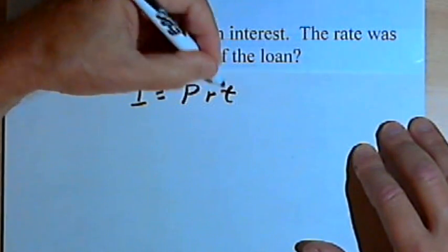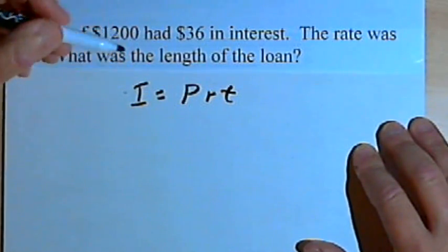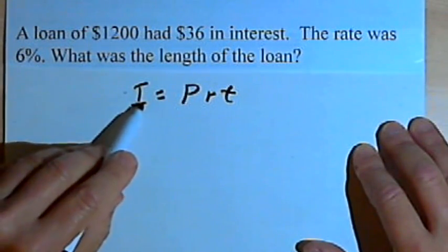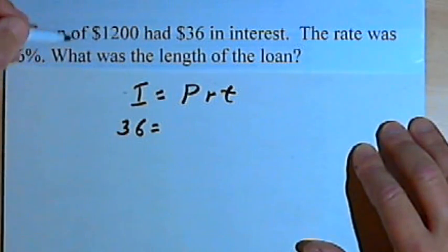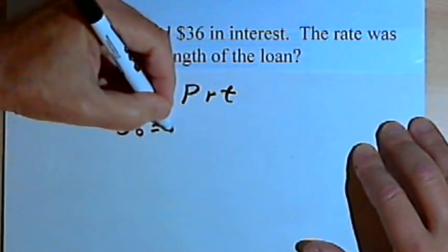There's our basic formula: I equals PRT. The interest is $36. That equals the principal, that was $1,200,